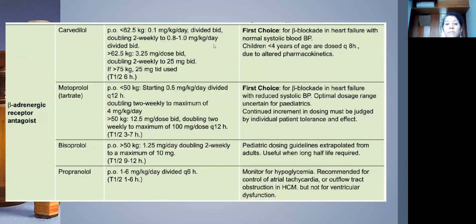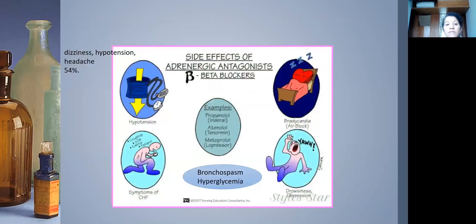In children under four years, a TID dosage may be needed. Metoprolol starting dose is 0.5 mg/kg/day, doubled every two weeks. Carvedilol is our drug of choice; propranolol is no longer commonly used. Side effects of beta blockers include hypotension with dizziness and headache in about half of patients — this usually settles with time.